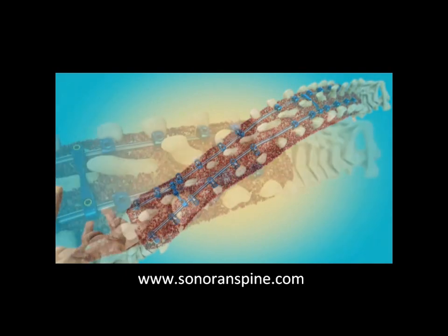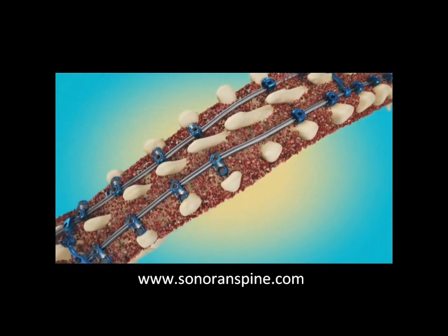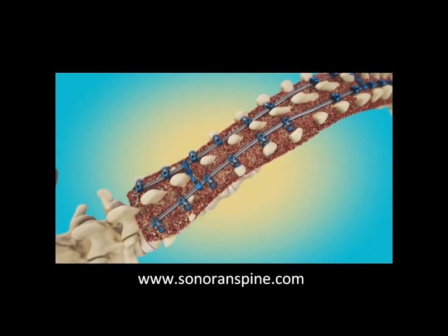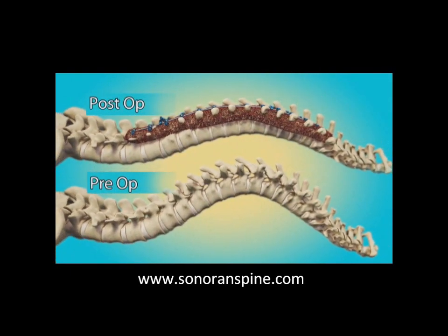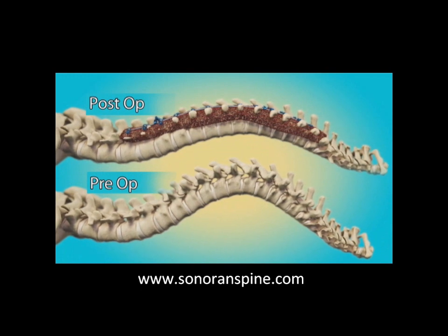Bone graft is applied. Bone graft then fuses. And this is what locks the spine in that new straightened posture. You can see here the difference between preoperative and postop.